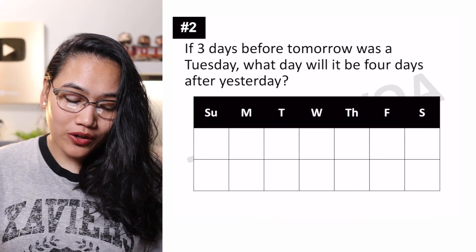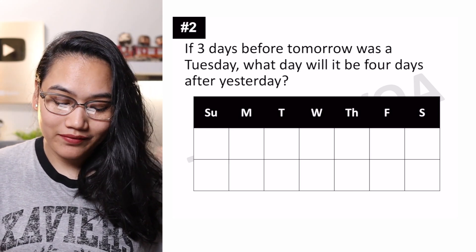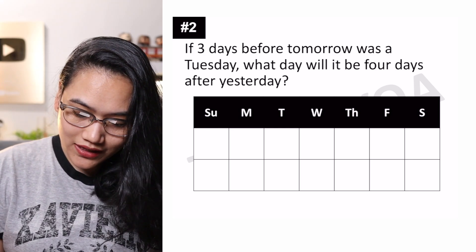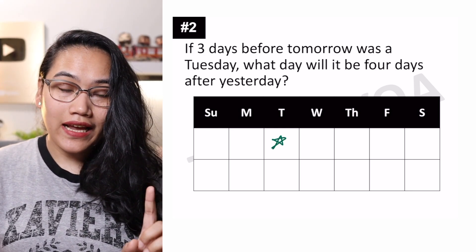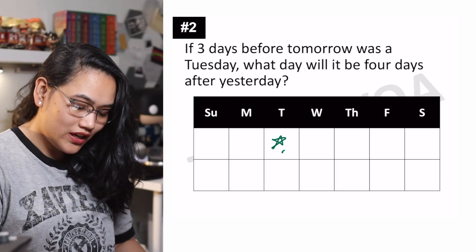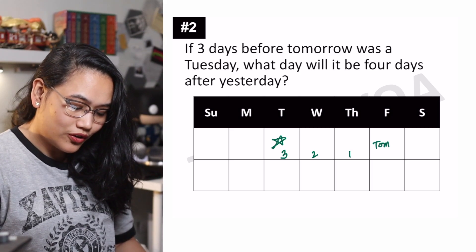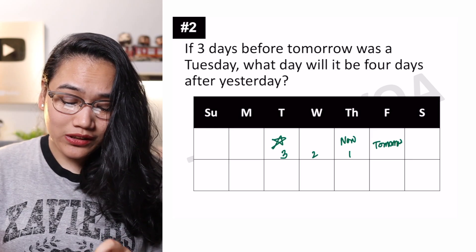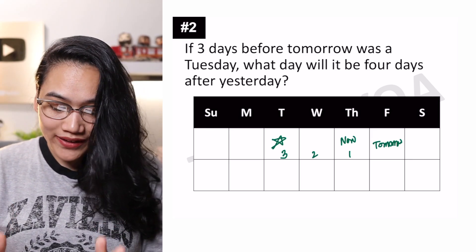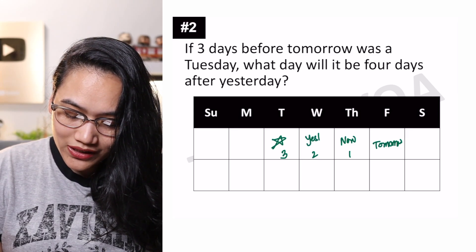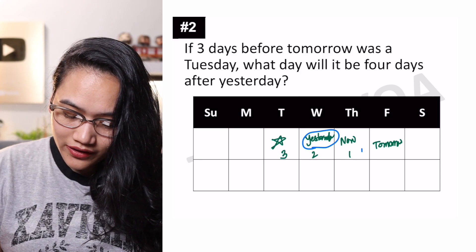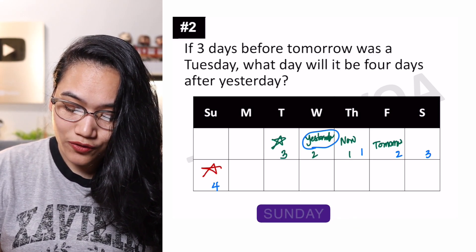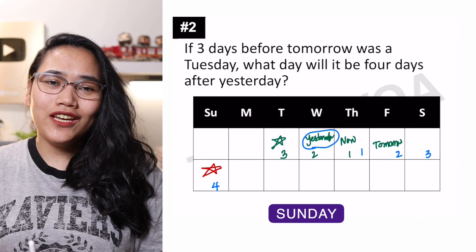So question number two — it says, if three days before tomorrow was a Tuesday, what day will it be four days after yesterday? Bilangin natin. Three days before tomorrow was a Tuesday — yun yung ating reference point. That is a Tuesday, so i-mark lang natin siya right here, and that was three days before tomorrow. So this is three, two, one, and this is tomorrow. Kung itong tomorrow, ang now is one day before that — that would be a Thursday. Kaya yung what day will it be four days after yesterday — kung now ay Thursday, ang yesterday would be Wednesday. And we're going to count one, two, three, four — and then you have Saturday. This will be four days after yesterday. The answer is Sunday.